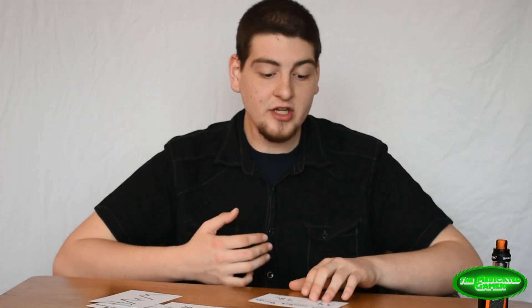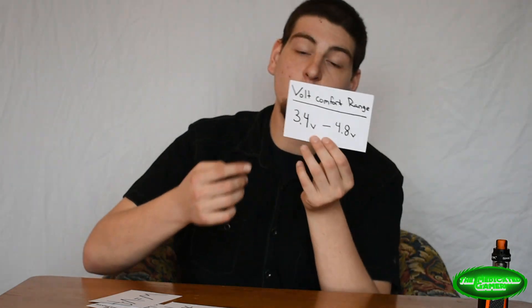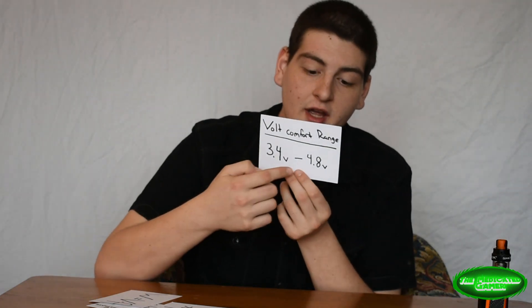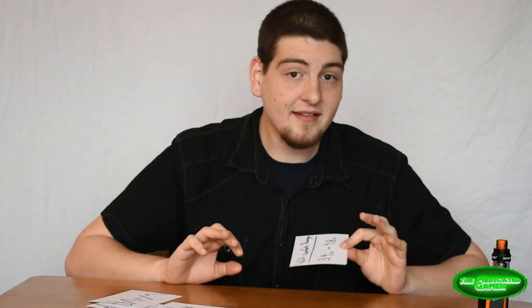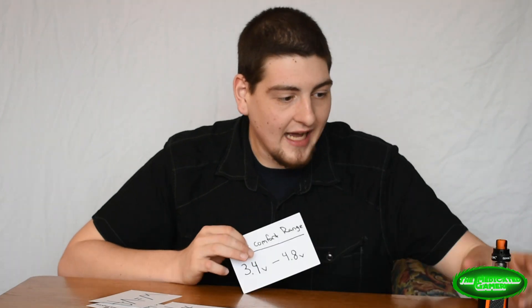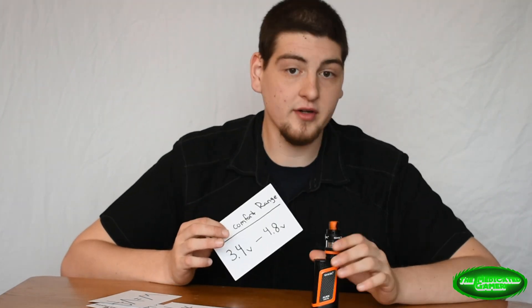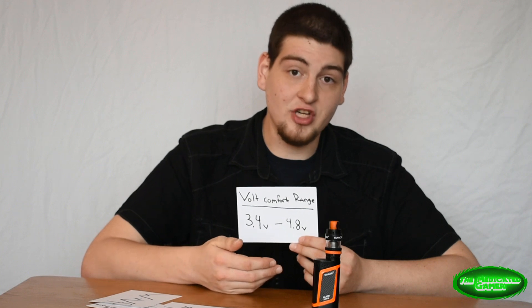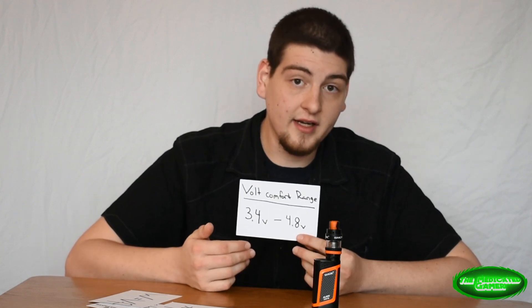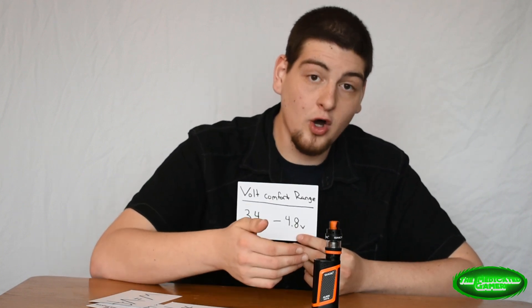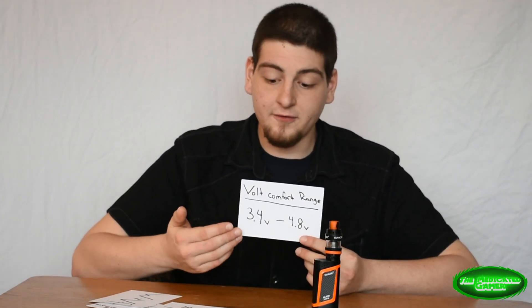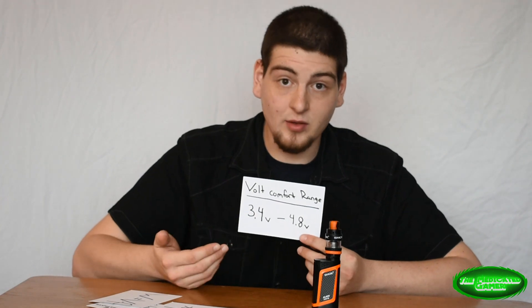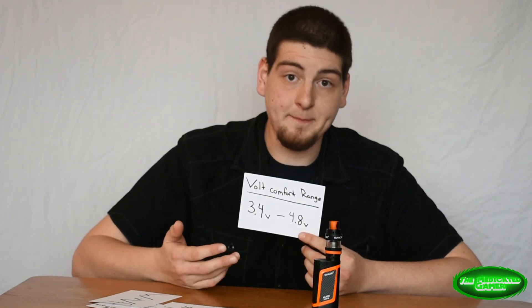Voltage is essentially what you're looking for when adjusting your vape setup. I find that my vape comfort range is anywhere between 3.4 volts and 4.8 volts. It depends on what type of coil you're running, of course. However, I find this is my comfort range. I will adjust my watts accordingly to fit the ohm coil so that the volts will be somewhere between 3.4 and 4.8.